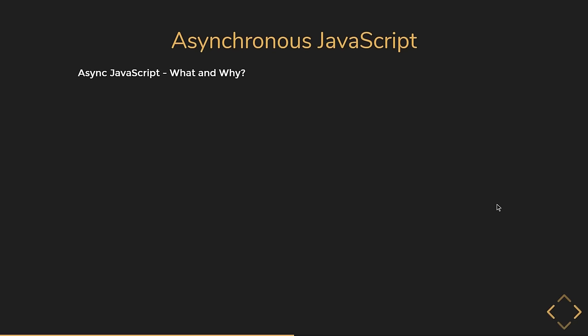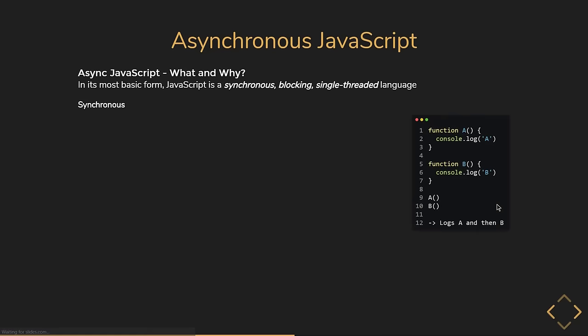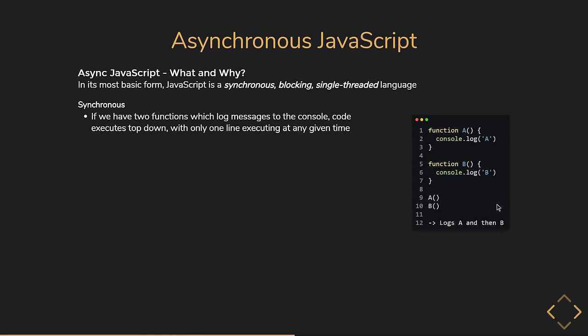The first point to understand about JavaScript is that in its most basic form, JavaScript is a synchronous, blocking, single-threaded language. Let's understand what these three points mean. JavaScript is synchronous — if we have two functions which log messages to the console, code executes top-down with only one line executing at any given time. JavaScript will always log A and then B.